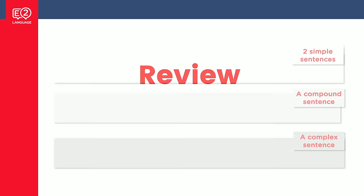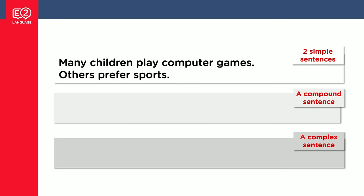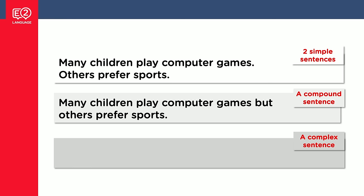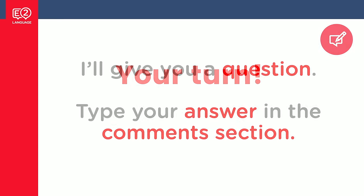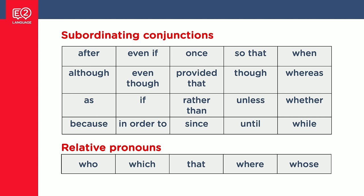Let's review. These are two simple sentences. We can make a compound sentence by putting a word from FANBOYS in between them, and this is a complex sentence. So now it's over to you — I'm going to give you a question and I want you to type your answer or thoughts into the comments section. Make sure that you use some subordinating conjunctions. If you're feeling confident, try some relative pronouns as well. Remember, to score band seven in IELTS writing and avoid band four, you have to use some complex sentences. Be confident with at least three or four subordinating conjunctions and make sure you use them in your writing.